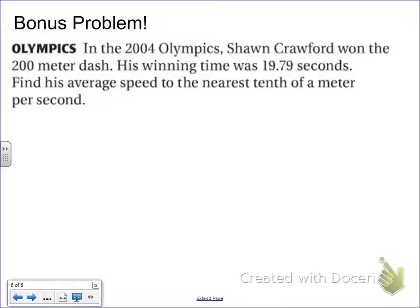It doesn't change, even in a word problem. So in the 2004 Olympics, Shawn Crawford won the 200-meter dash. His winning time was 19.79 seconds. Find his average speed to the nearest tenth of a meter per second. All right, so the formula that we need for this problem is an old one called distance equals rate times time.